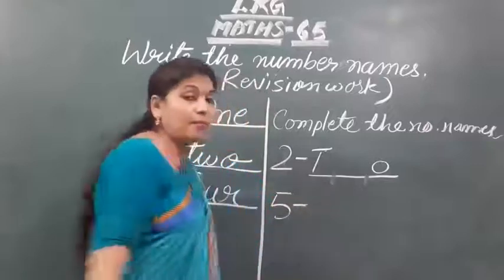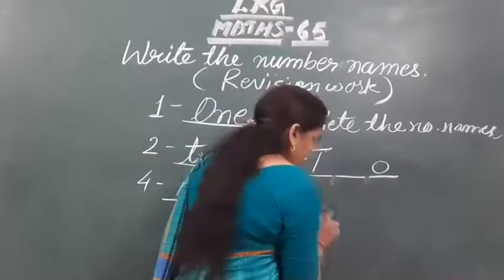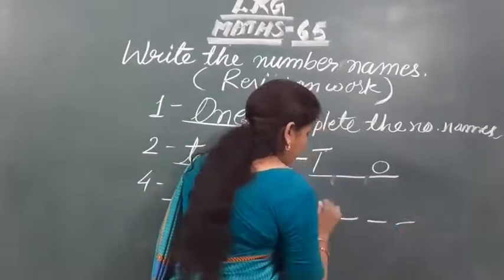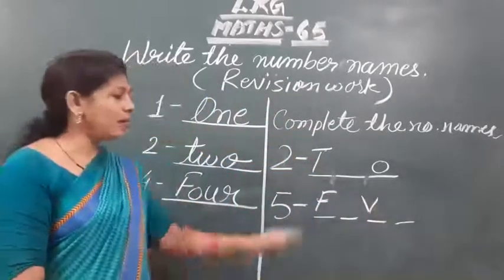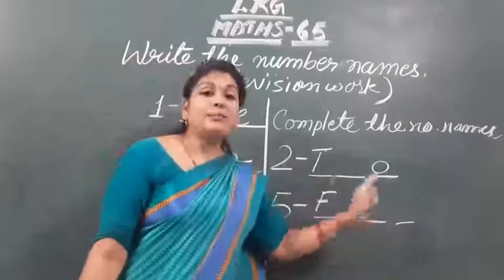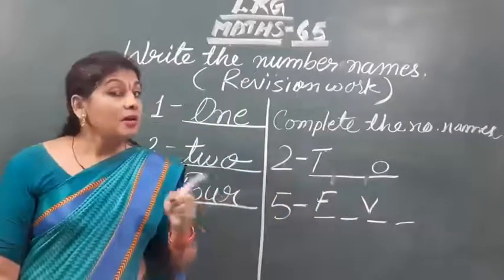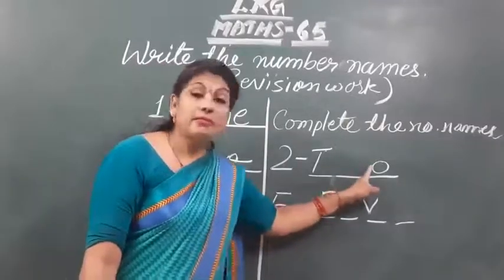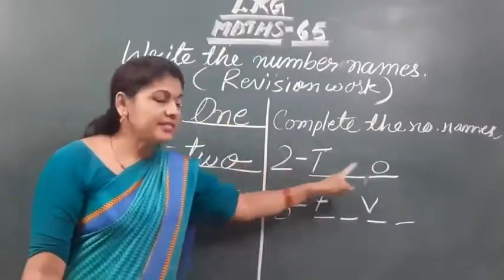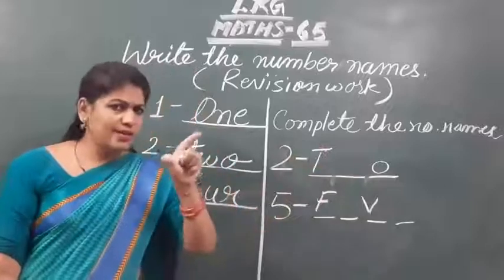Suppose here is given number five. Then if it is written like this here. What do you have to do? Complete it. In this, some letters are already given there, but some are not given there. Then what will you do? You will complete the number name. Already given some numbers, already given some letters also.